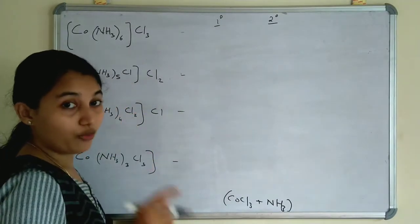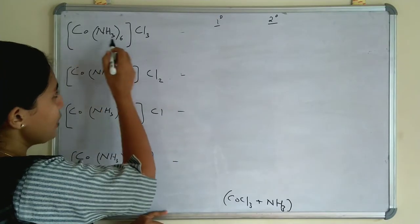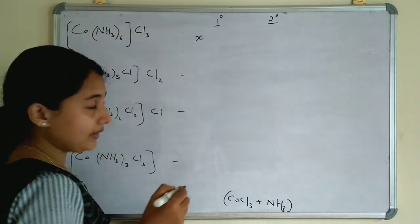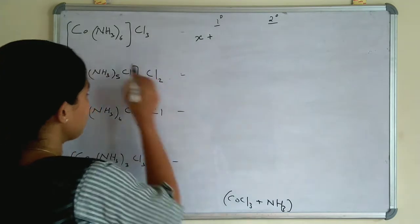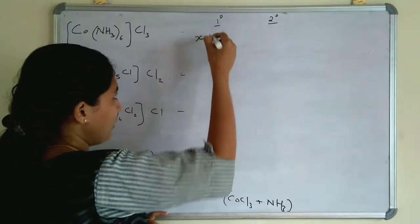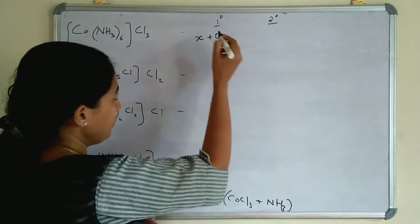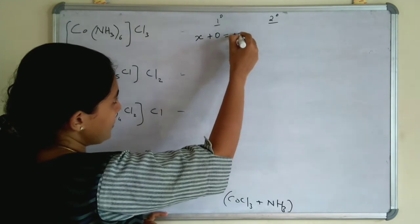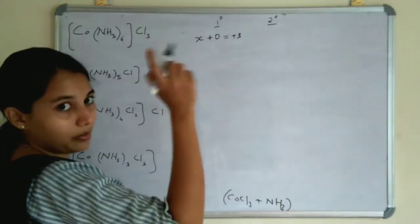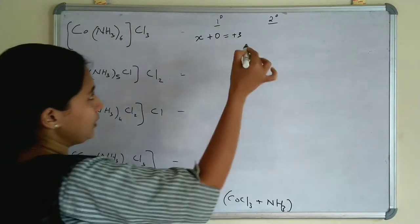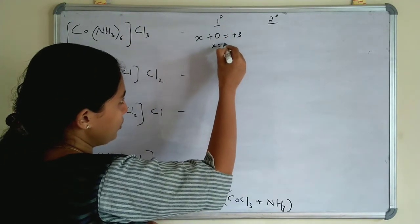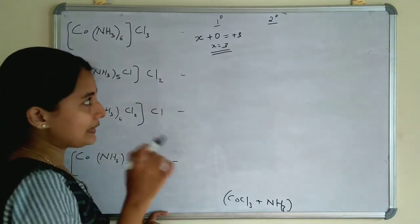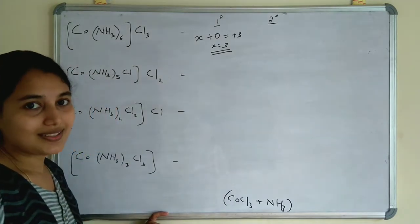Here CoCl₃ is the metal atom. To find the oxidation number, let the oxidation number of Co be X. For ammonia the charge is 0, so X + 0 = +3, because there are 3 Cl⁻ here giving a minus, so this complex will have +3. Therefore X = 3. The oxidation number of Co in this compound is 3.